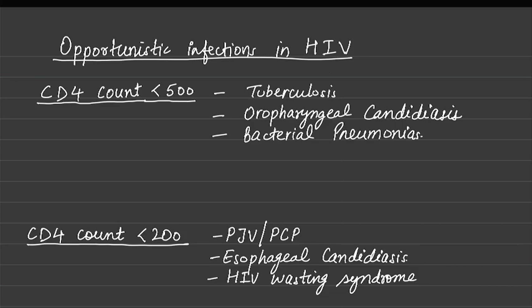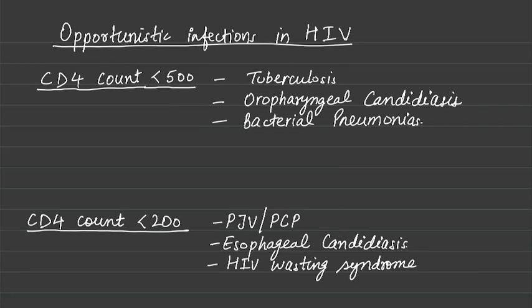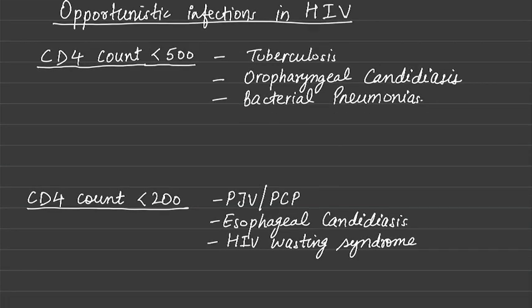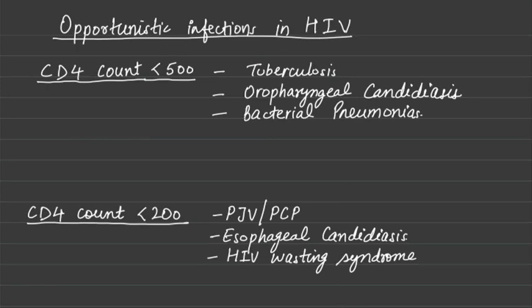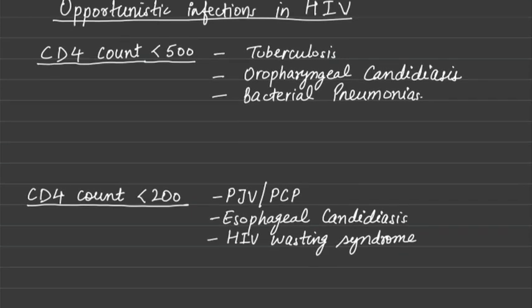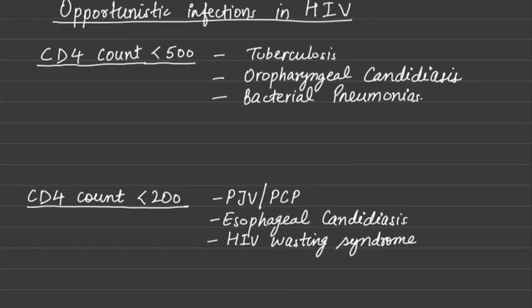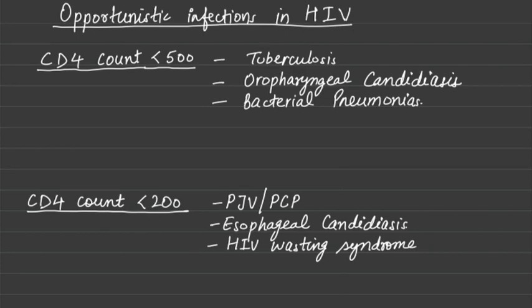Let us discuss opportunistic infections in HIV. We know that opportunistic infections in HIV occur when the CD4 count is less than 500. When the count is more than 500, there are no opportunistic infections.